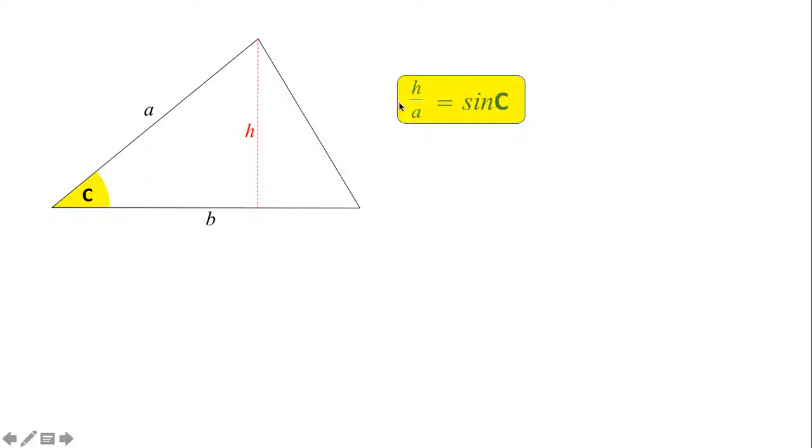Now by definition, h over a equals sine C. That's in the right angle triangle on the left here. There to there to there is a right angle triangle, and in that right angle triangle the opposite over the hypotenuse is the sine of the angle, so the opposite is h in this case.